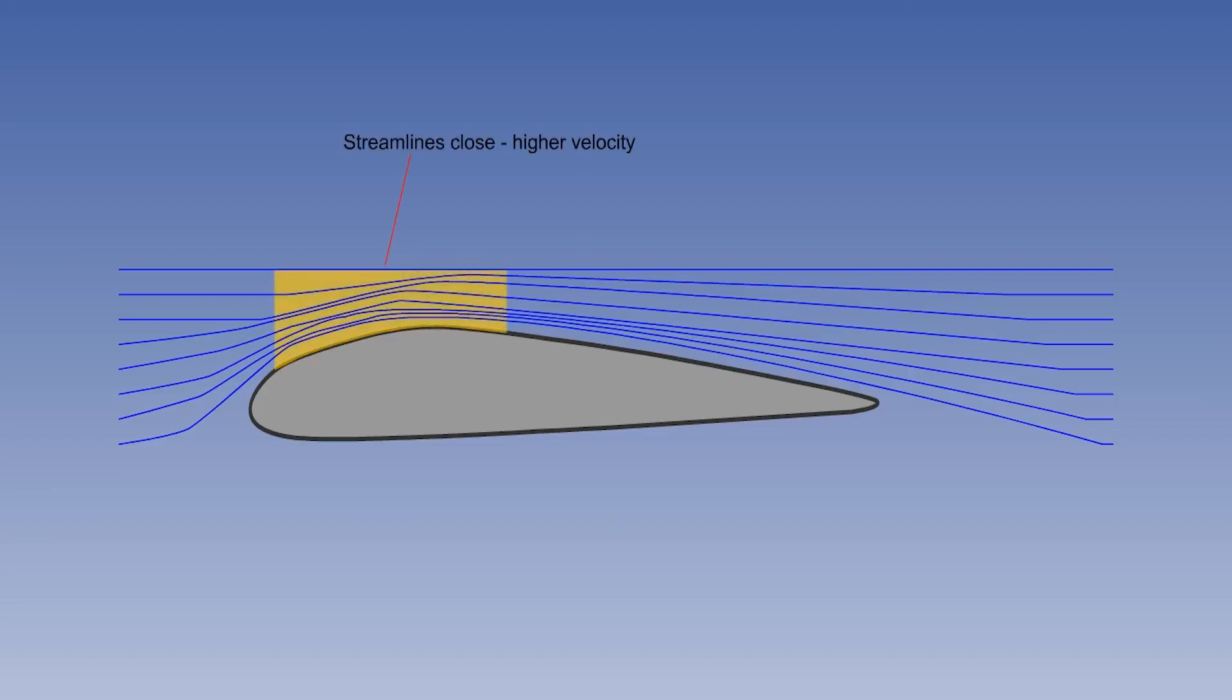A streamline is the path followed by a particle of air in a steady airflow, and one streamline cannot cross another. When they are shown close together, it indicates increased velocity, and when wide apart, decreased velocity.